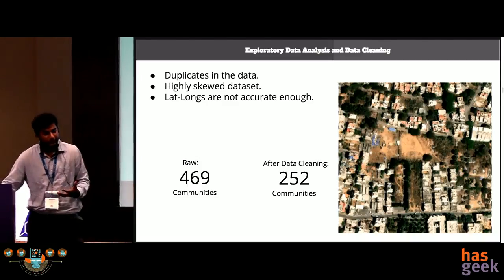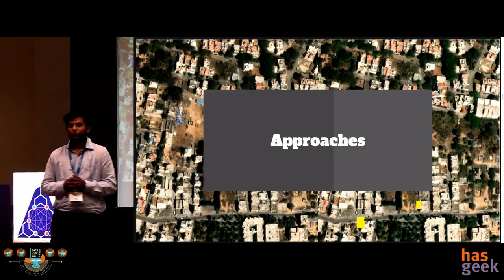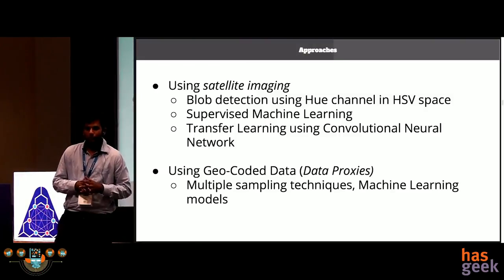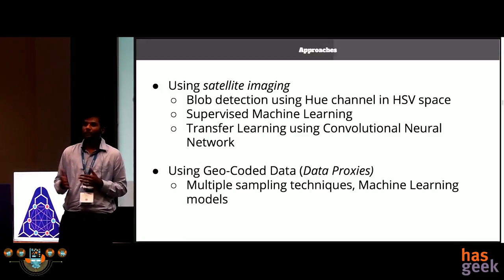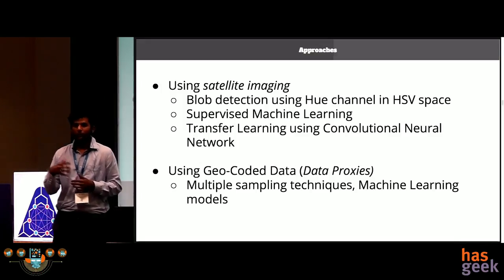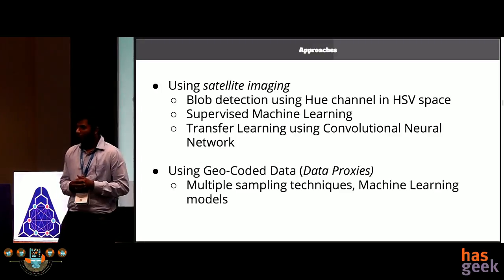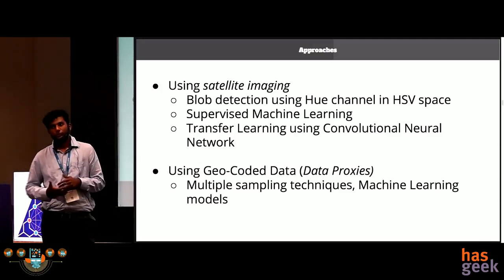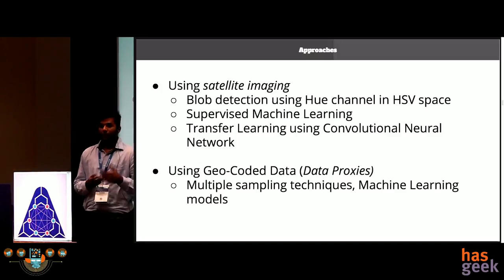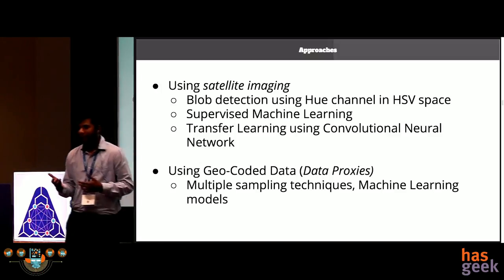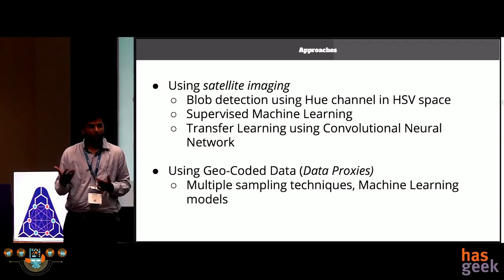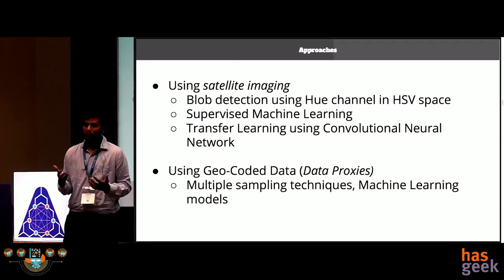Once we had the cleaned data, we started prototyping using multiple approaches. Our two major approaches using satellite images were: a traditional image processing technique called blob detection, where the UMC would be the blob; a supervised machine learning approach; and a transfer learning approach using convolutional neural networks. The other major approach was to use geocoded data, where we used multiple sampling techniques along with different machine learning models to see what worked best.